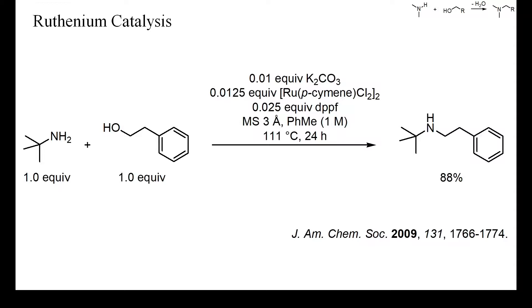In this example of ruthenium-catalyzed amine alkylation, the reaction conditions were only slightly basic, and therefore probably better suited for multifunctional starting materials. A surprisingly high yield of secondary amine was obtained from an equimolar mixture of starting materials.